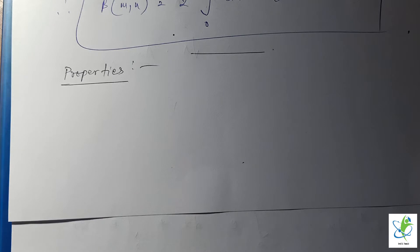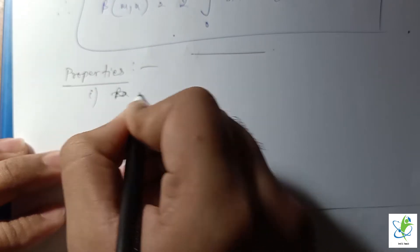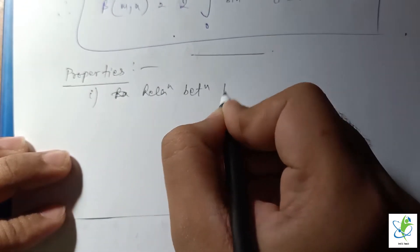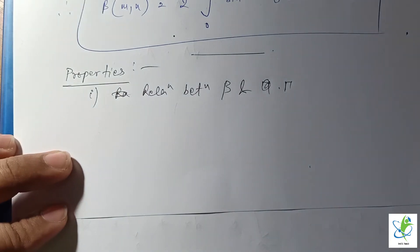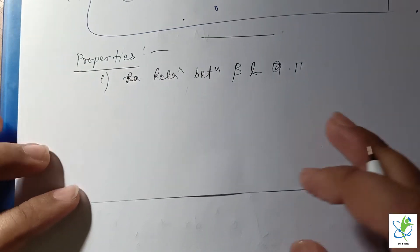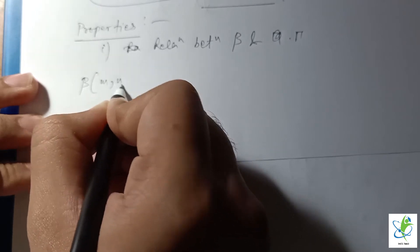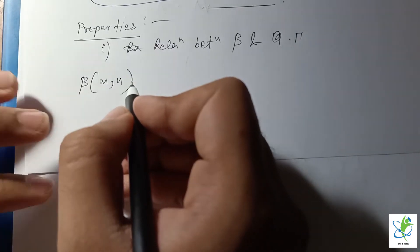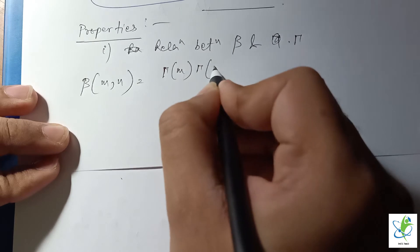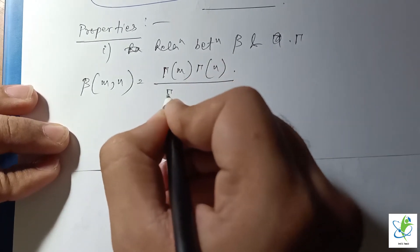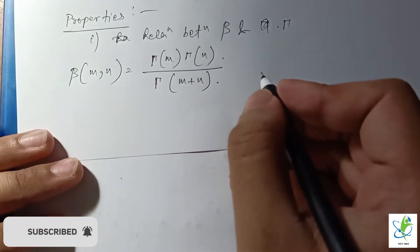Now I will write down the properties of the beta function. The first property is the relation between the beta function and the gamma function: β(m, n) = Γ(m) · Γ(n) / Γ(m + n). This is the very first property of the beta function.